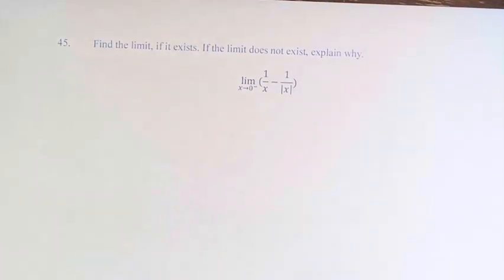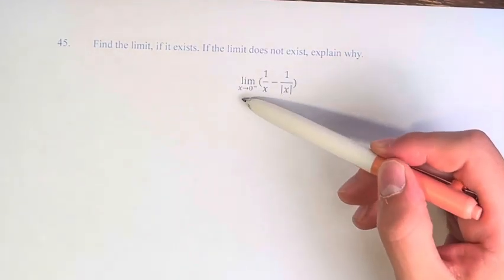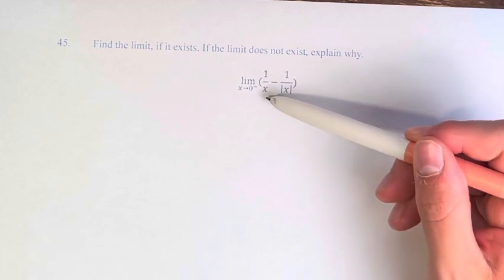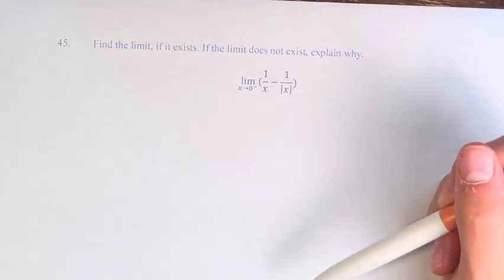Hello and welcome back to another video. In this problem, we're asked to find the limit if it exists, and if the limit does not exist, explain why. So we have the limit as x approaches 0 from the left of 1 over x minus 1 over the absolute value of x.